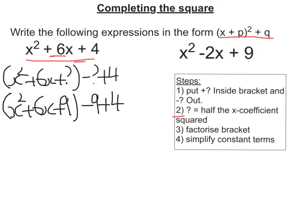Next it says step 3, factorise the bracket. So we're looking for two numbers that multiply to get 9 but add to get 6. So they are 3 and 3 which is what we're hoping for. So we're going to get x plus 3 and x plus 3, minus 9 plus 4.